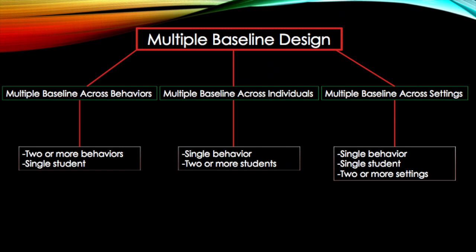Multiple baseline designs are divided into three different categories of dependent variables. The first is a multiple baseline across behaviors, in which two or more behaviors of a single student are examined. The second is a multiple baseline across individuals, in which a single shared behavior between two or more students is examined. The third is a multiple baseline across settings, in which a single behavior of a single student is examined in two or more different settings.